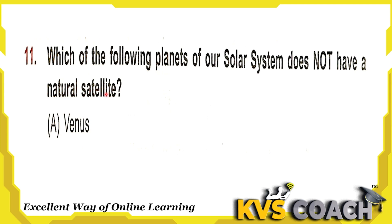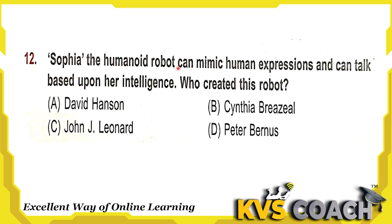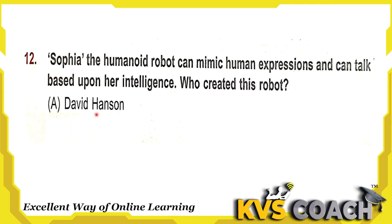Next question: Sophia, the humanoid robot, can make human expressions and can talk based on artificial intelligence — who created this robot? Option A is David Hanson — yes, this is the right answer. Option B is Cynthia Breazeal — she is founder and director of the Personal Robots Group. Option C is John J. Leonard — an American robotics scientist. Option D is Peter Berners — a scientist and professor of enterprise architecture. So the right answer is David Hanson.